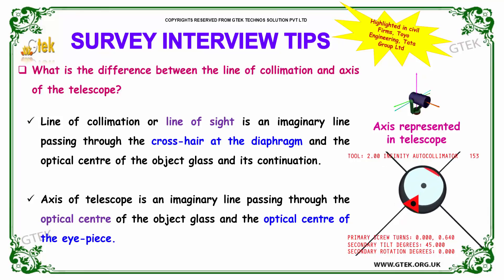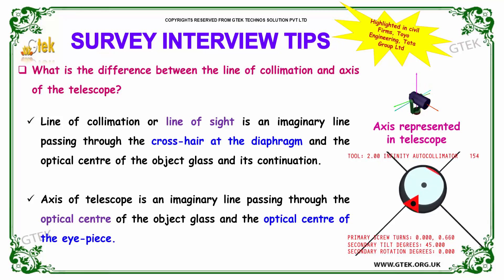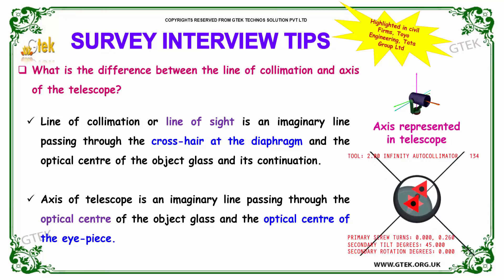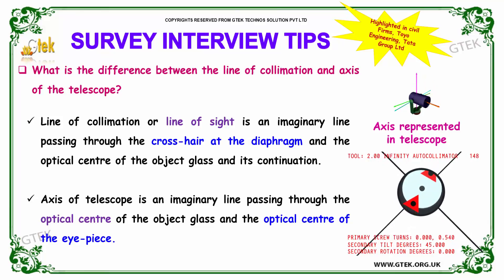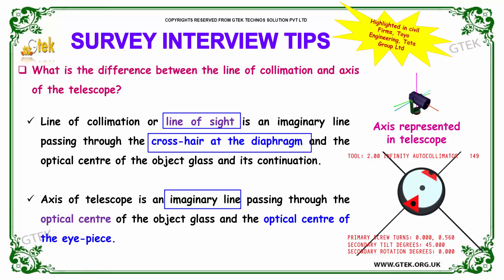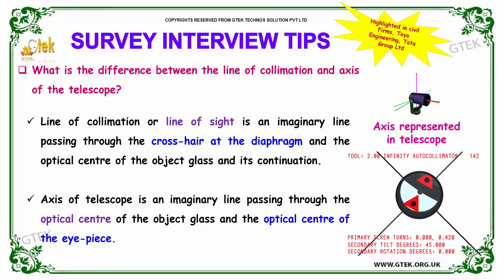Our next question is: what is the difference between the line of collimation and the axis of the telescope? The line of collimation or line of sight is an imaginary line passing through the crosshair at the diaphragm and the optical center of the object glass and its continuation. The axis of the telescope is an imaginary line passing through the optic center of the object glass and the optic center of the eyepiece. That makes the major difference between the line of collimation and the axis of the telescope.